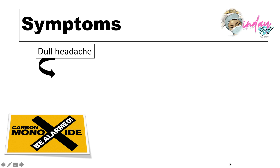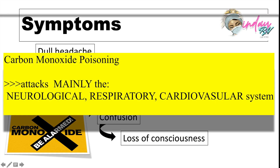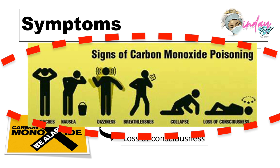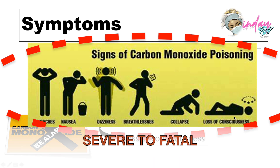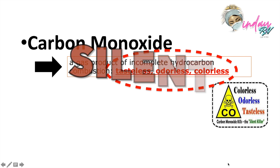To briefly summarize the symptoms of carbon monoxide poisoning: the patient will first suffer from dull headache (found in mild symptoms), then weakness, dizziness, confusion, and loss of consciousness progressing from mild to severe. Carbon monoxide attacks the patient's neurological and respiratory conditions. Other signs and symptoms include blurred vision, nausea and vomiting, shortness of breathing, and palpitations. While the patient is still standing, this is mild; however, if the patient is already lying on the floor, they may suffer loss of consciousness to coma, and worse, death. Carbon monoxide is particularly dangerous for people who are sleeping or intoxicated because it is tasteless, odorless, and colorless — the silent killer.